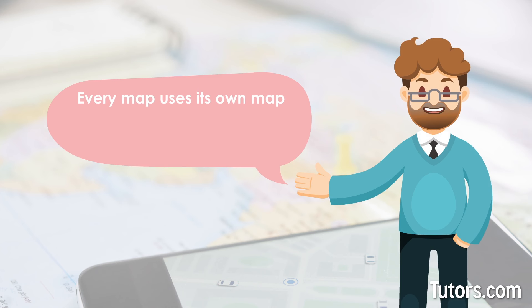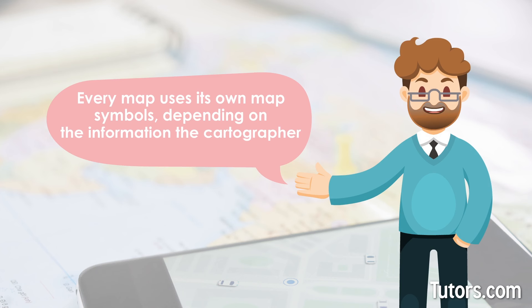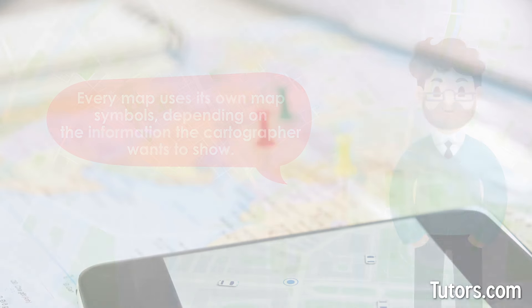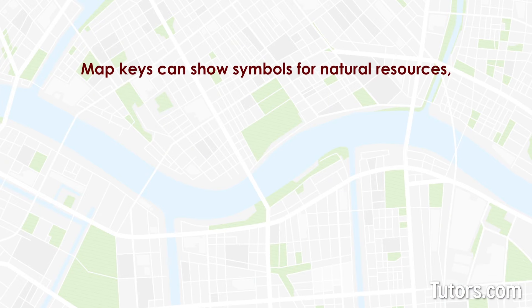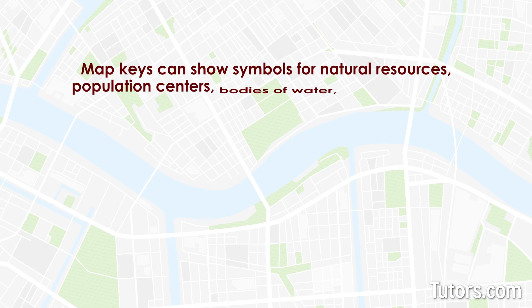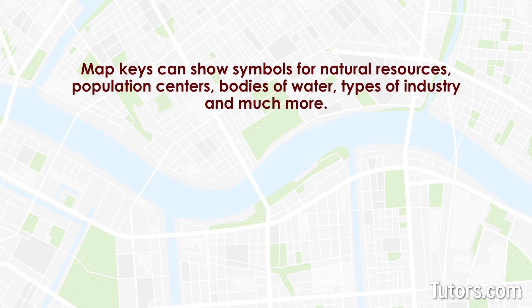Every map uses its own map symbols, depending on the information the cartographer wants to show. Map keys show symbols for natural resources, population centers, bodies of water, types of industry, and much more.